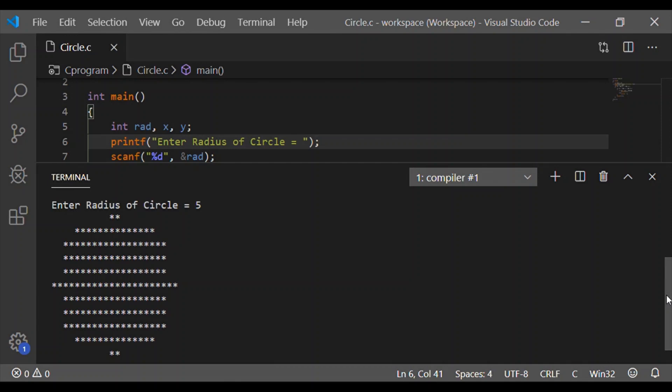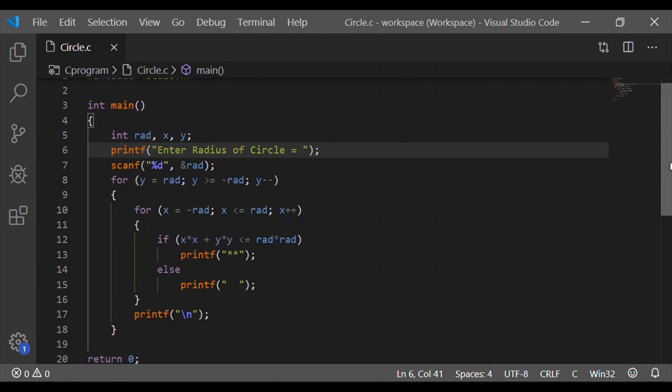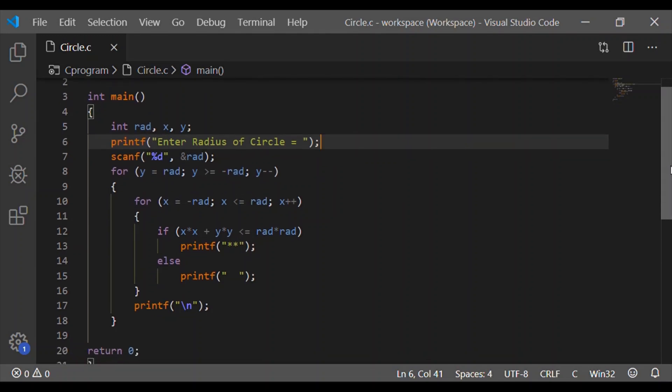You can try with floating variables for radius and incrementing with values less than 1, and you can get a perfect circle. Please write in comments about it. Also, please subscribe to our channel.